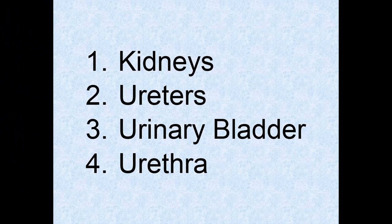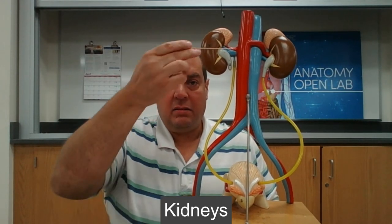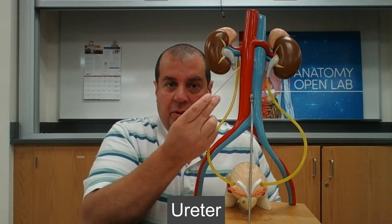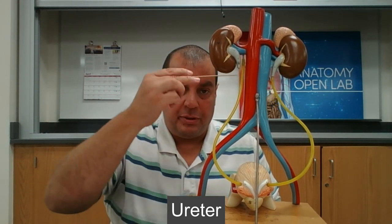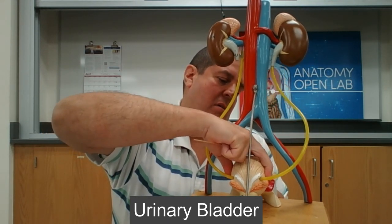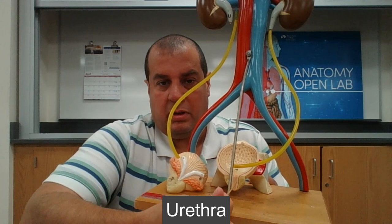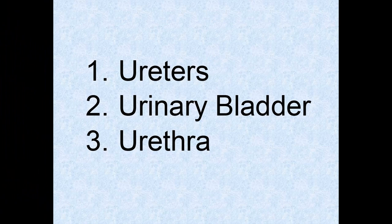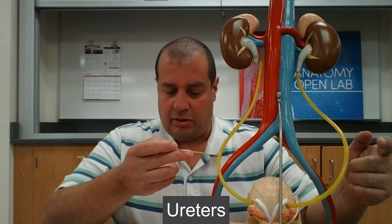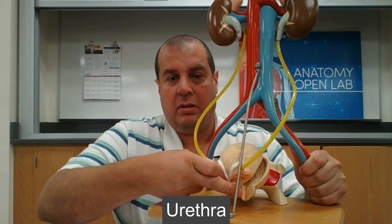The urinary system organs include the kidneys, ureters, urinary bladder, and urethra. You can see the kidneys and the ureters here — the ureter is supposed to connect here but it broke — and coming out of the urinary bladder we have the urethra. The urinary tract consists of a pair of tubes called ureters, a urinary bladder, and the urethra.